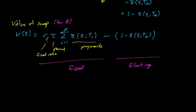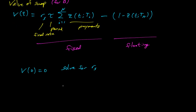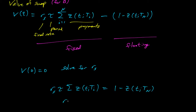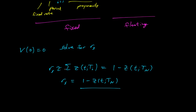So that's how we value a swap. Generally swaps are constructed so that at time zero the value to both parties is zero — they're balanced. We choose the fixed rate to make the expected value to both parties be zero. Solving for R_s gives: R_s times tau times the sum of the Z's equals one minus Z(tn), so R_s equals one minus Z(tn) over tau times the sum from i equals one to n of Z(t_i).